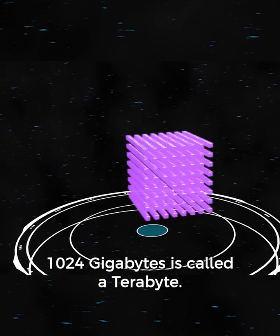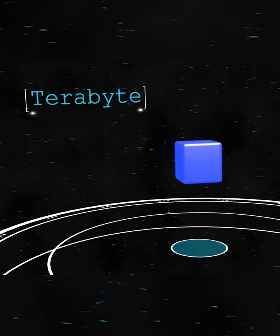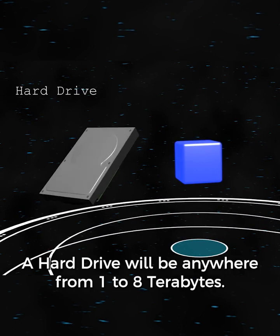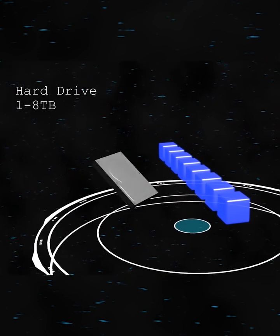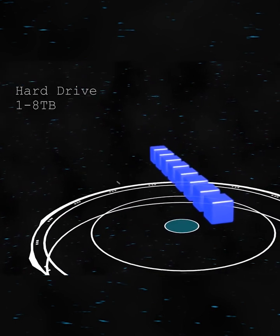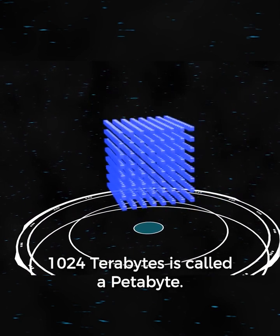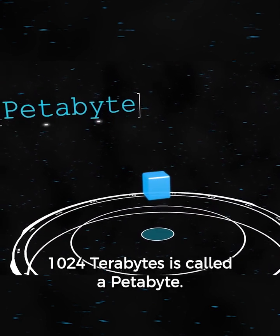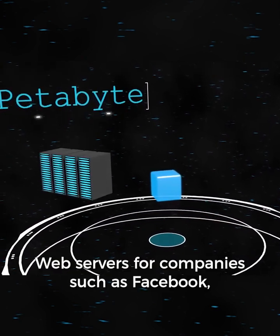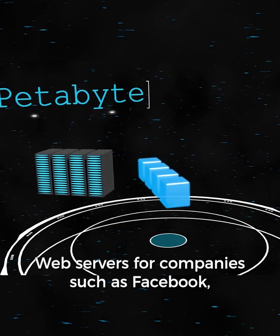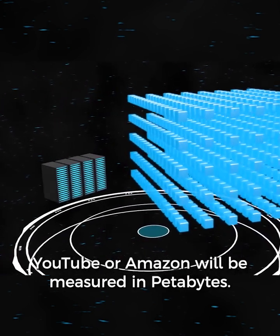1024 gigabytes is called a terabyte. A hard drive will be anywhere from 1 to 8 terabytes. 1024 terabytes is called a petabyte. Web servers for companies such as Facebook, YouTube, or Amazon will be measured in petabytes.